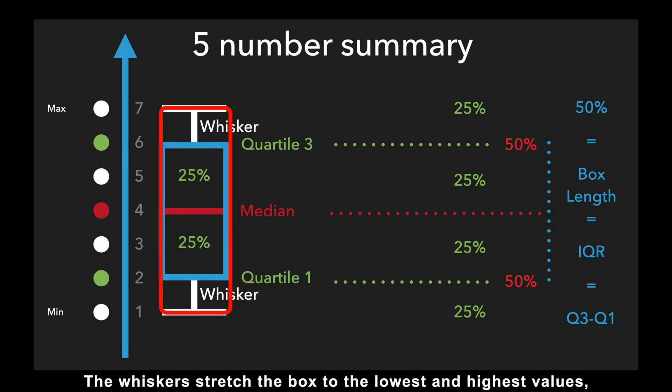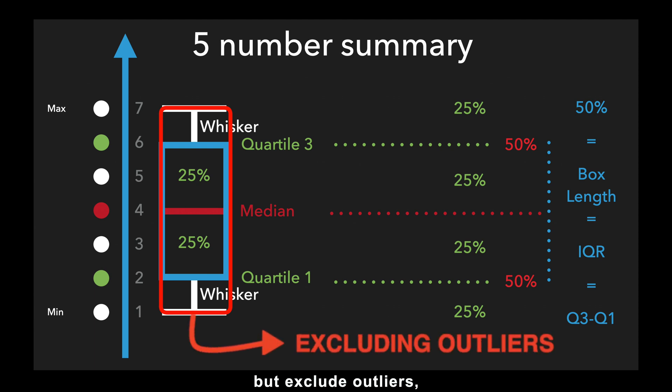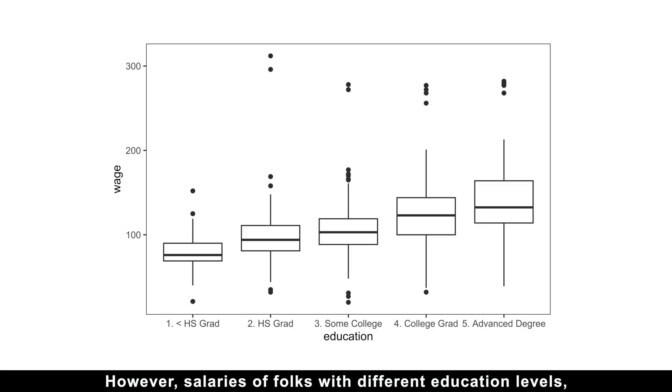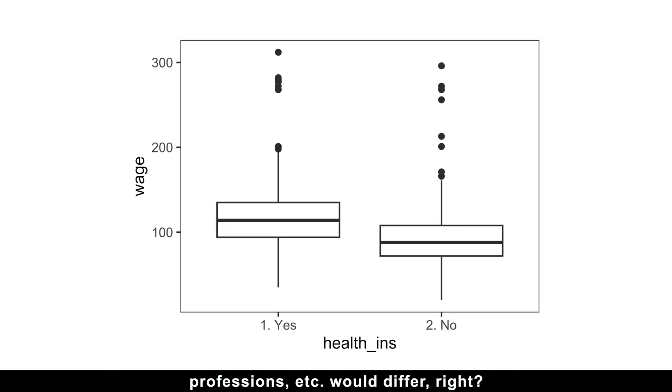The whiskers stretch the box to the lowest and highest values, but exclude outliers, giving us a really good idea of what we could generally earn. However, salaries of folks with different education levels, professions, etc. would differ, right? That leads us to the second benefit of box plots.